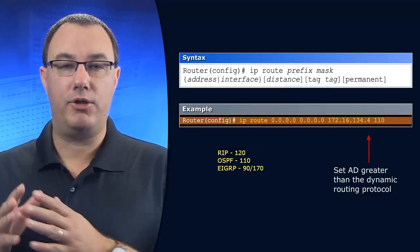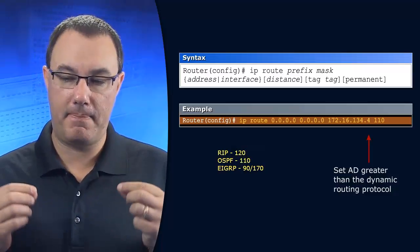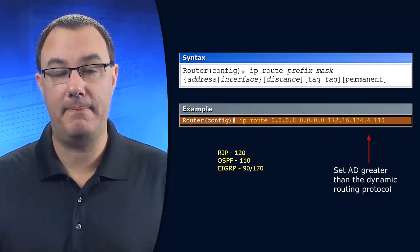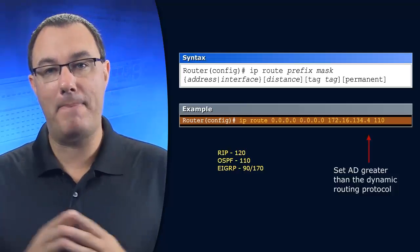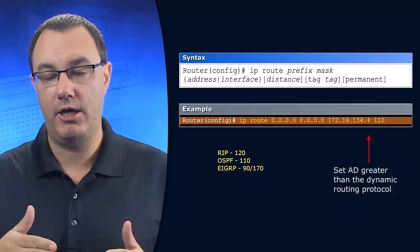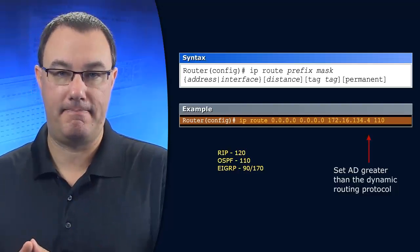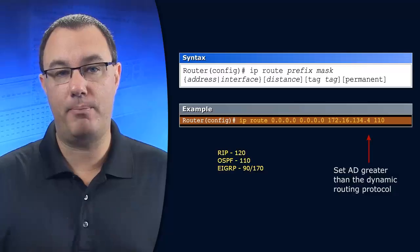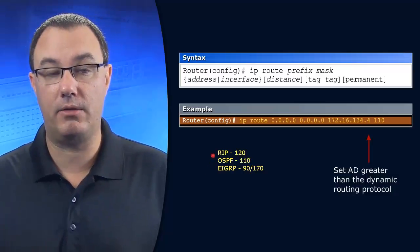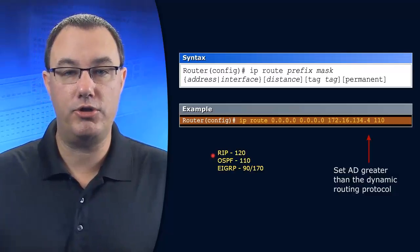What if you had your dynamic routing environment be the primary connectivity, but you had a back door where dynamic routing wasn't working — a backup route, a different pathway that is not part of the autonomous system of your dynamic routing protocol? What you can do is this.